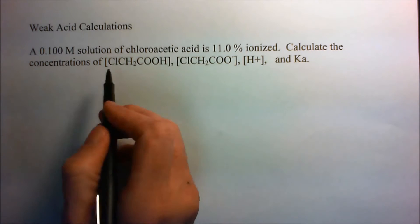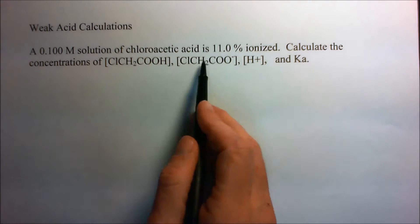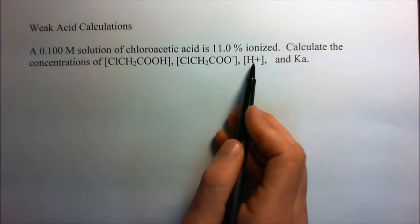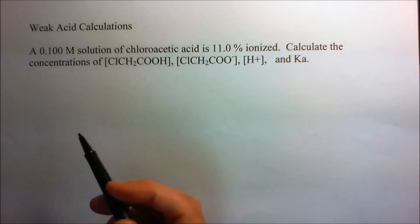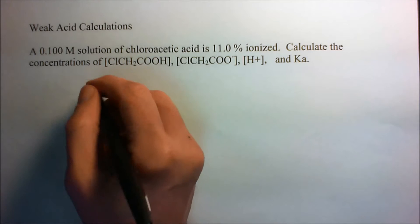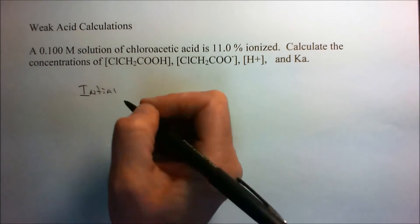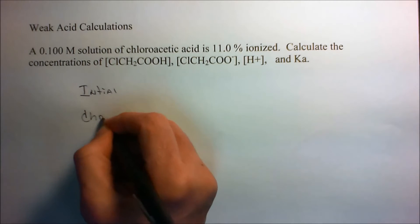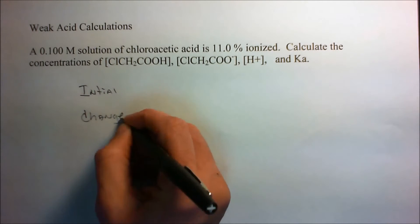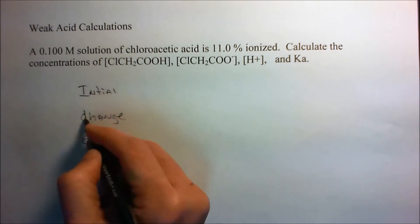So what do we have here? Well, the chloroacetic acid is in equilibrium with the hydrogen plus ions and the conjugate base. The best way to do this sort of thing is to use the ICE method, which is we take initial concentrations of each one of these guys, the change, and we calculate the equilibrium concentration. ICE.